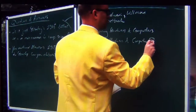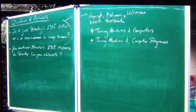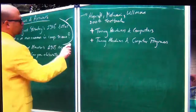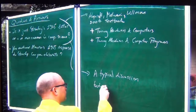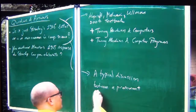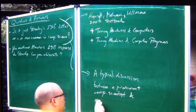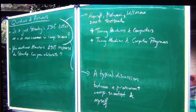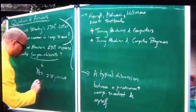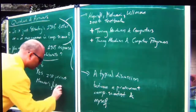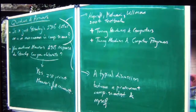A second way to answer the first question is that I will present a typical discussion between a prominent computer scientist and myself, published in the last chapter of my Turing Tales book. And for the second question, I will present Maurer's full account in a moment. Maurer's approach was based on finite abstractions, not unlike Dijkstra or Parnas.